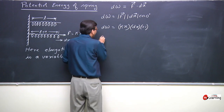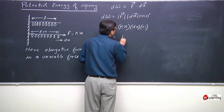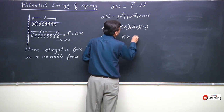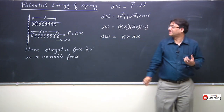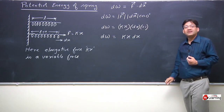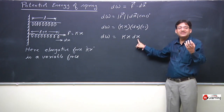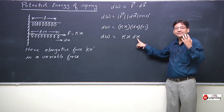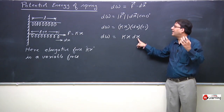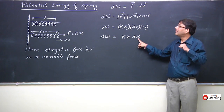So the differential work needed to elongate the spring by dx length is dW = kx dx. This is the differential work needed to elongate the spring by dx.